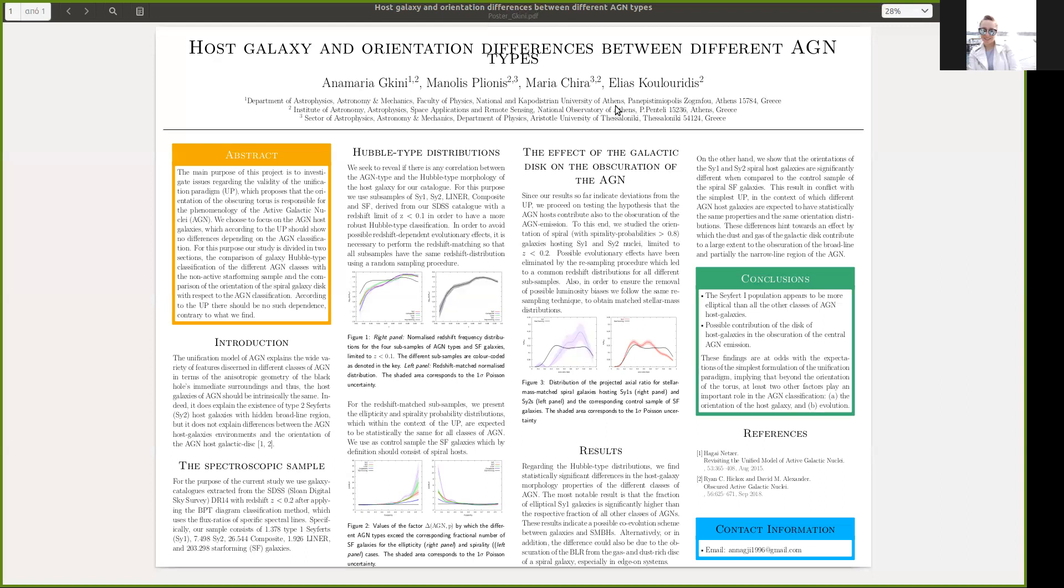So, the main purpose of the current work was to test aspects of the simplest unification paradigm by searching for differences in the properties of the host galaxies of various AGN types. We find that the Seyfert-1 population appears to be more elliptical than all the other classes of AGN host galaxies, and that there is a possible contribution of the disk of the host galaxies in the obscuration of the central AGN emission. Thank you so much.